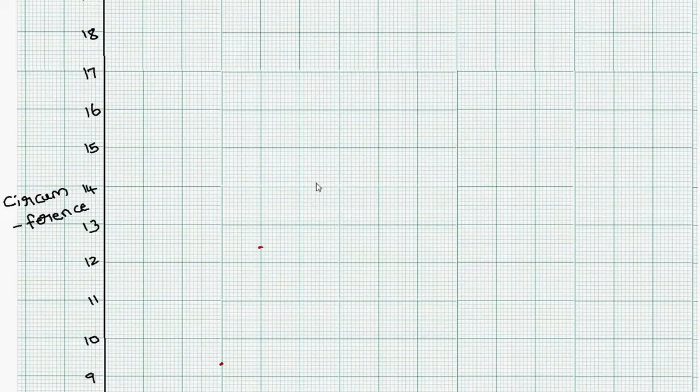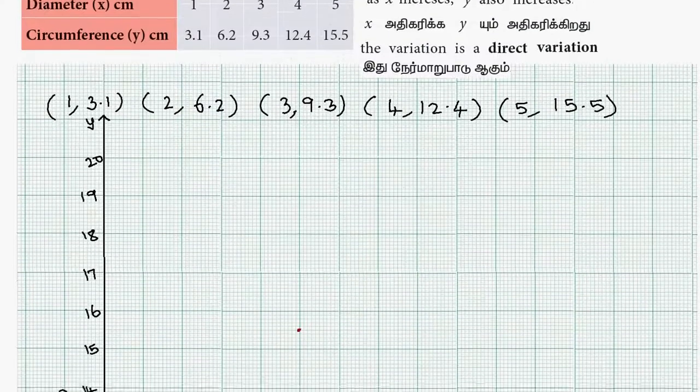Point 5, 15.5. So 15 is able to write. Here we need to write a straight line.